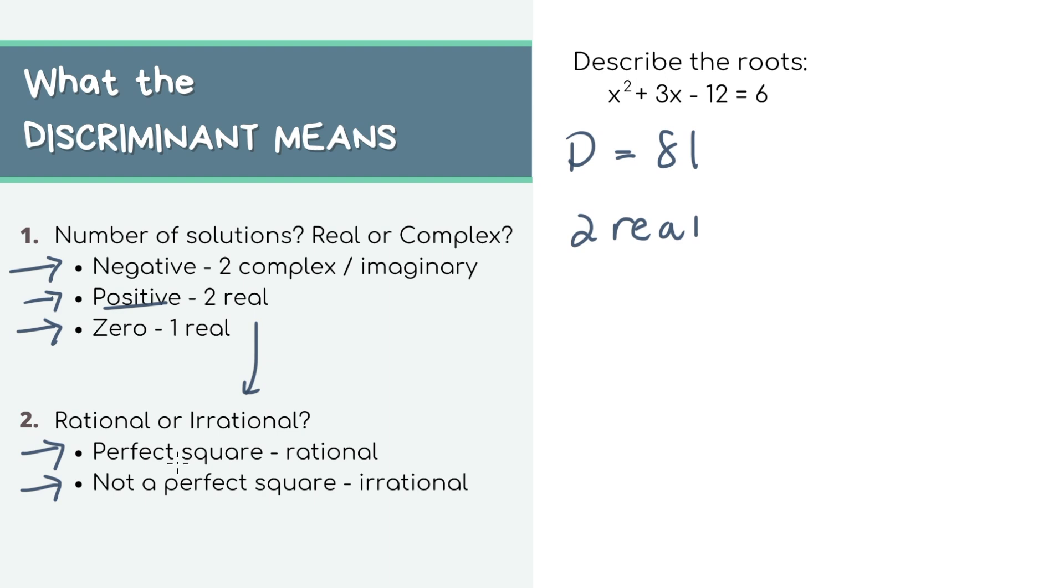So if we look at our example 81, this is a perfect square because 9 squared equals 81. So we know our roots are rational.